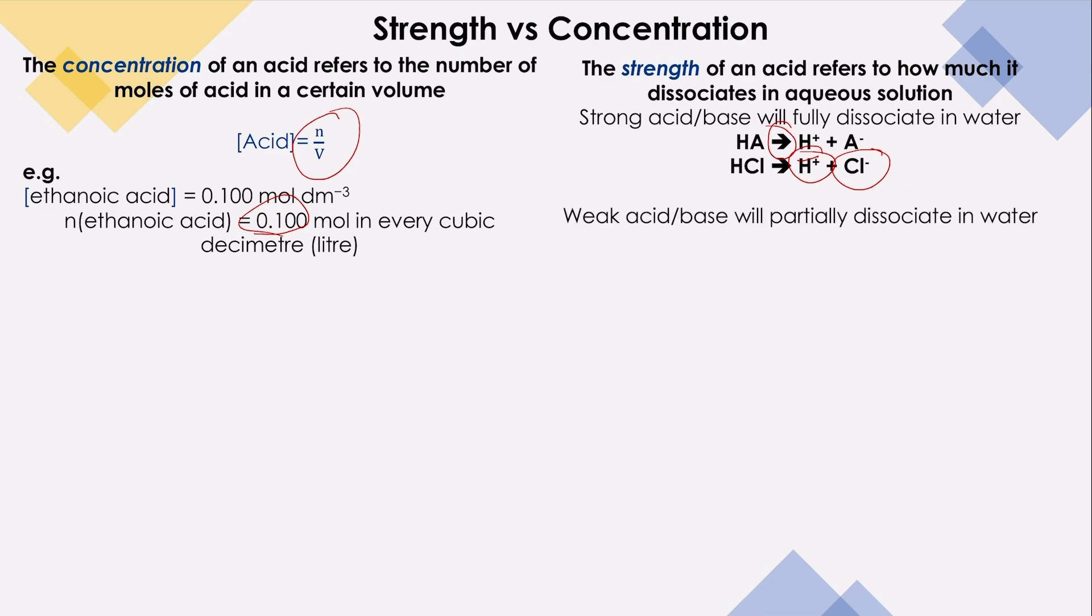Weak acid or base will partially dissociate in water. We have here an example: HA is partially dissociated to H plus and A minus. Why is it partially? Because we have reversible arrow. An example for that: ethanoic acid will partially dissociate to H plus and CH3COO minus.